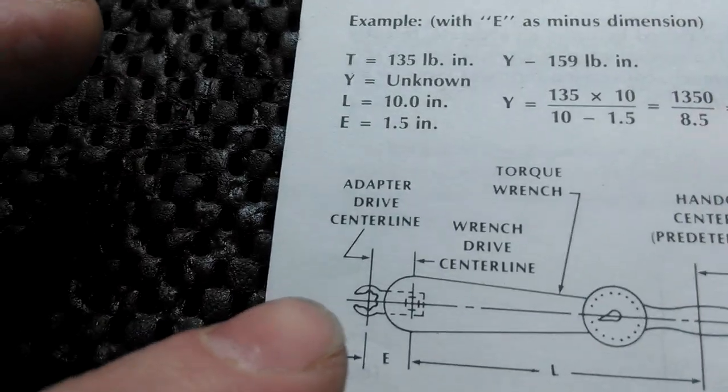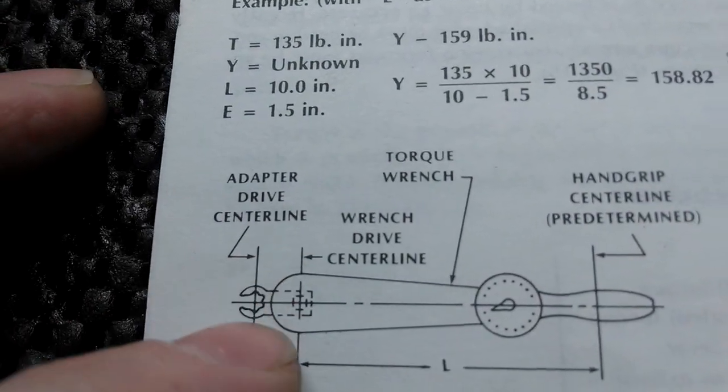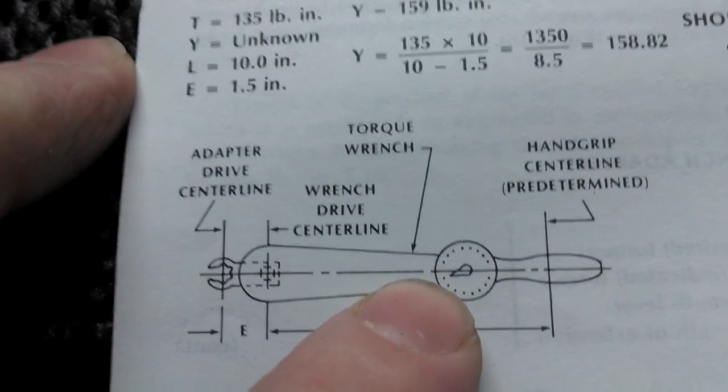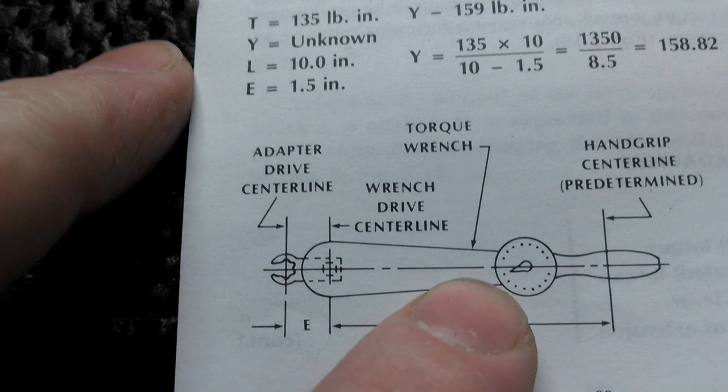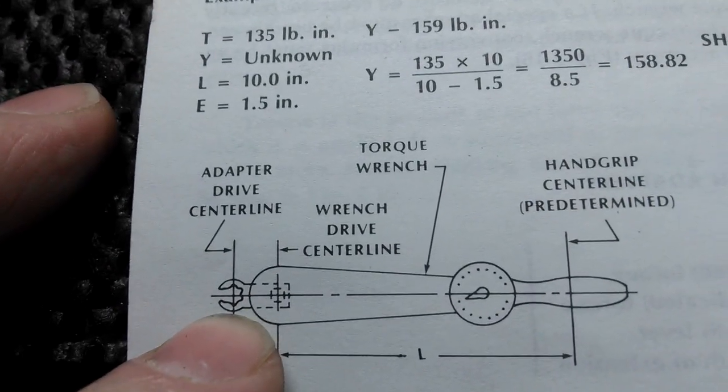If the technical manual tells you to put that adapter parallel to the torque wrench and set it to 40 foot-pounds, that's fine, go ahead and do that, that's what the manual says. But you're not applying 40 foot-pounds to the castle nut, and here's proof.